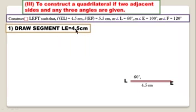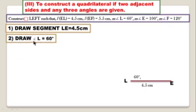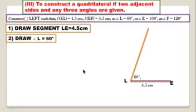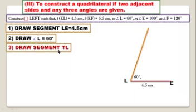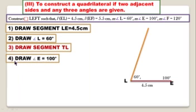Draw the segment EL. Draw the ray passing through this point; angle L is equal to 60 degrees. Draw the ray passing through this point for EL. Draw segment TN. Draw angle E equal to 100 degrees using a protractor.